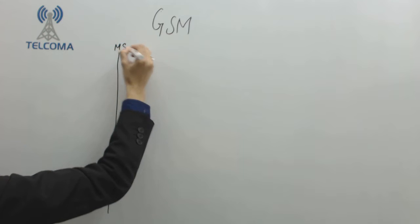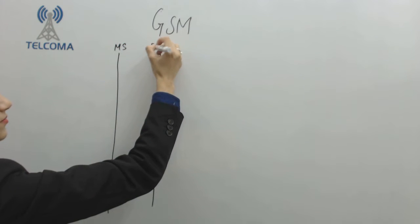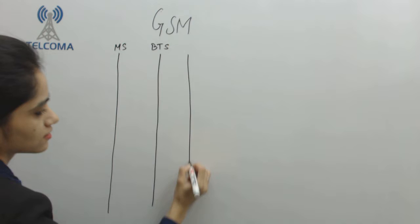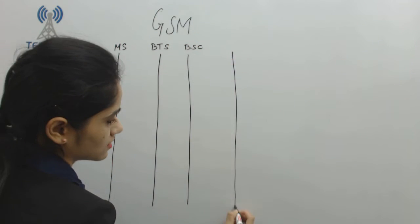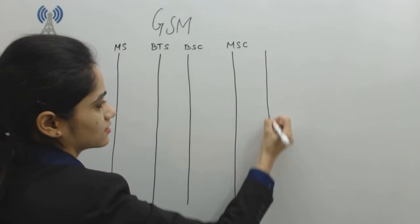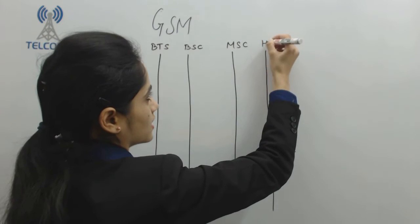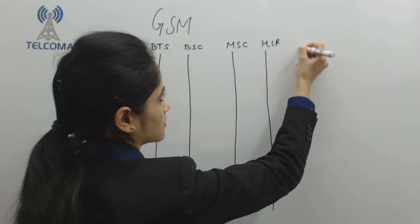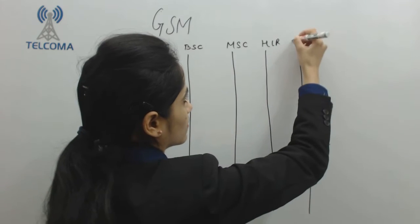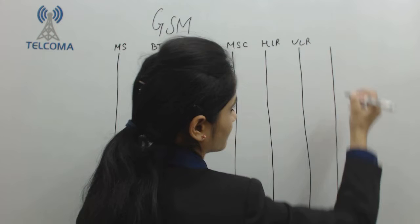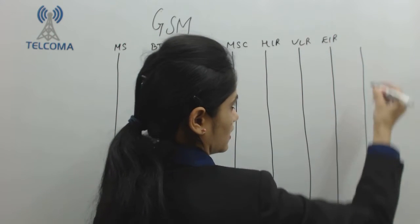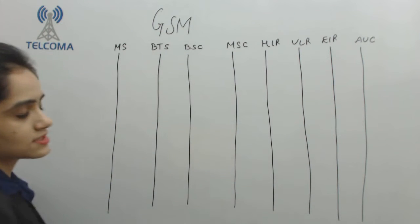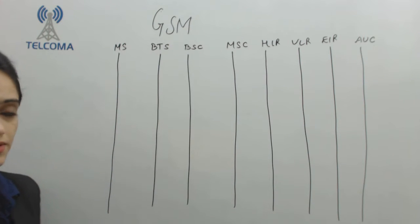The basic entities are: mobile station, BTS, BSC, MSC, HLR, VLR, EIR, and AUC. These are the databases which are required for signaling purposes.